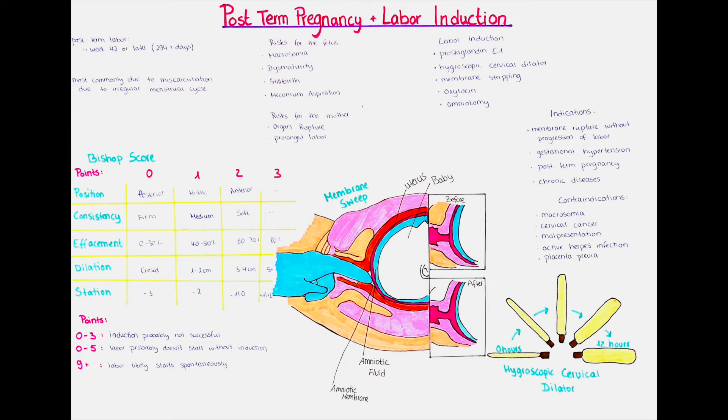Points are given between 0 and 2 for each parameter. The higher the points, the better. The maximum points that can be achieved are 10 points, indicating that everything is normal. These tests are usually done twice weekly from week 41 on.